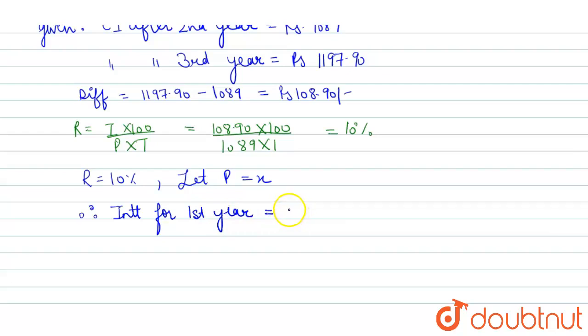interest for first year equals, we will apply the formula of simple interest that is P×R×T/100. Here P is X, rate is 10, time is 1, over 100, that equals 10X/100. After solving it, we will get X/10.